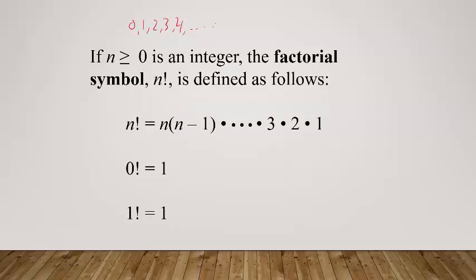The factorial symbol, n factorial, which would be something like five factorial, is defined as follows: n factorial equals n times n minus one, then you would go to times n minus two until you got down to three times two times one. Two other special cases: zero factorial equals one and one factorial equals one.